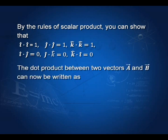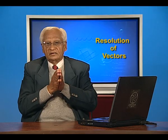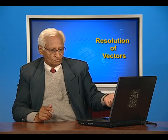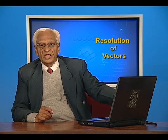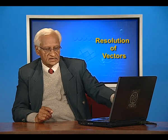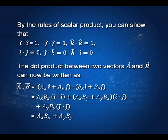The dot product between two vectors A and B can be written by expanding into components: vector A dot vector B equals A x i-cap plus A y j-cap dotted with B x i-cap plus B y j-cap. Using the rules that i-cap dot i-cap equals 1 and i-cap dot j-cap equals 0, we get the result A x B x plus A y B y. Since A dot B is a scalar, only scalar terms remain — the component of A along x multiplied by the component of B along x, plus the same for y.